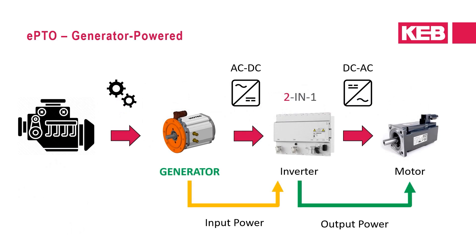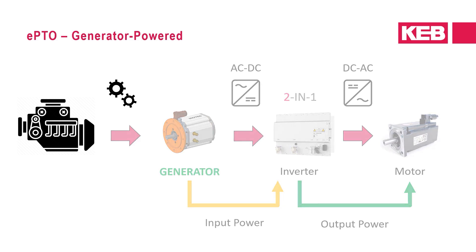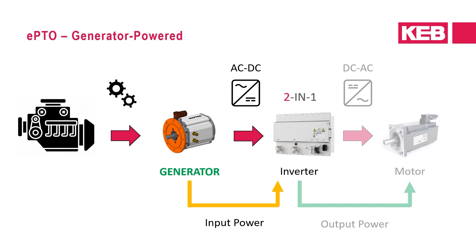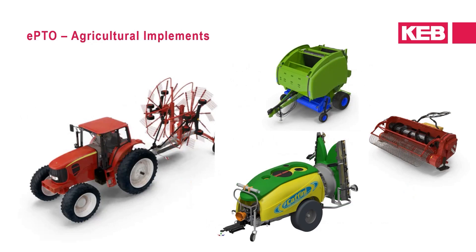At the other end of the EPTO topology spectrum is a generator powered solution. Here, the mechanical PTO of the combustion engine is retained but instead of being directly coupled to the hydraulic pump, it is coupled to a permanent magnet AC motor acting as a generator. The generator output is connected to an inverter output module which rectifies the AC waveform to supply the DC link voltage to power subsequent motor output modules such as the hydraulic pump. This topology allows for an electrified solution without the need for batteries, though it requires the engine to be running and is particularly suitable for electrifying agricultural implements via the tractor PTO.